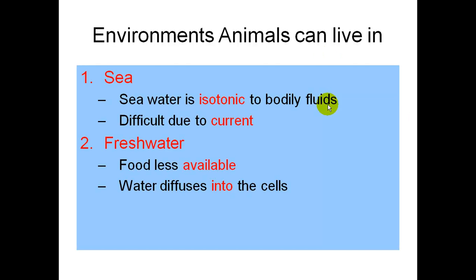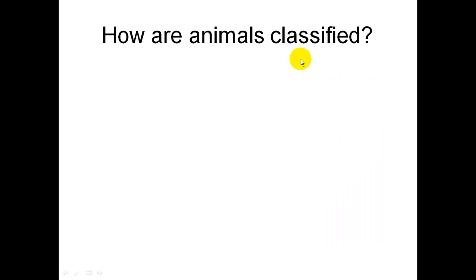There are three environments that animals can live in. They can live in the sea — it's difficult because of the current. Fresh water also, but there's less food available and they have the problem of water diffusing into their cells. And then some animals live on land, and that's a problem of dehydration.